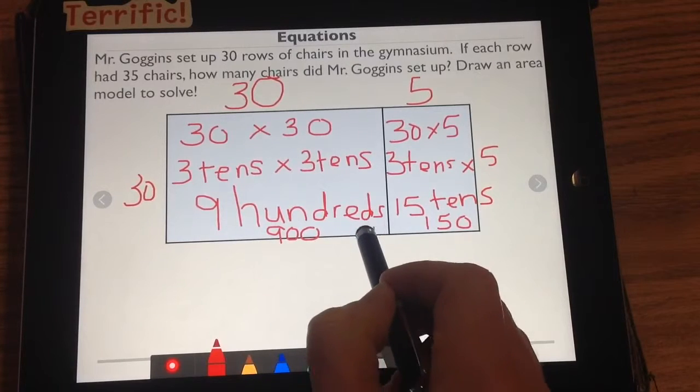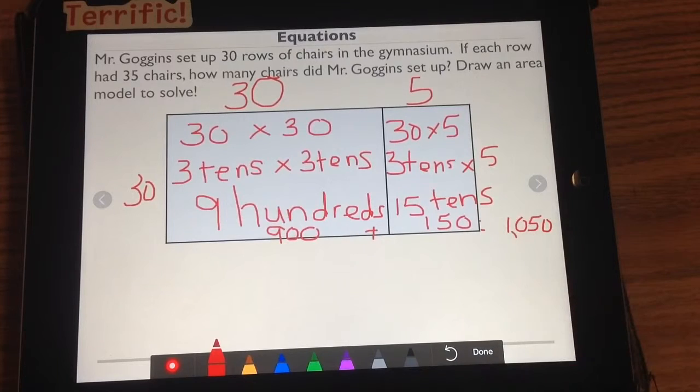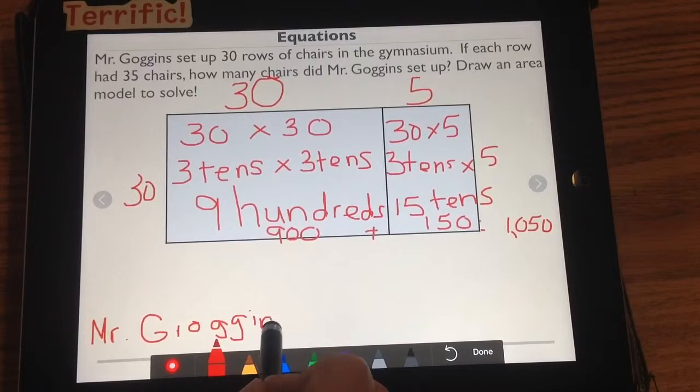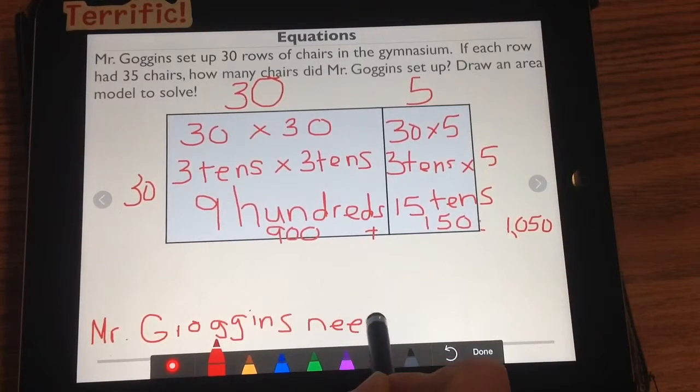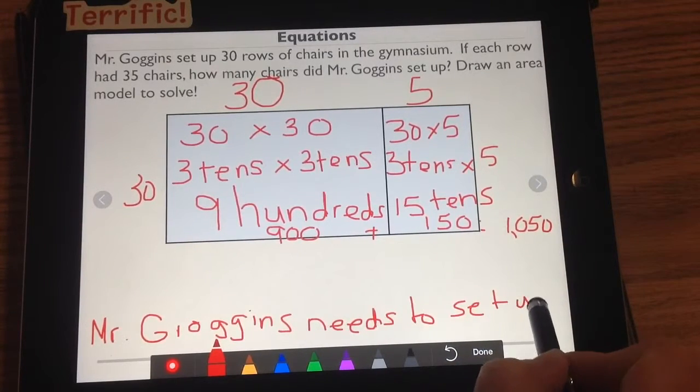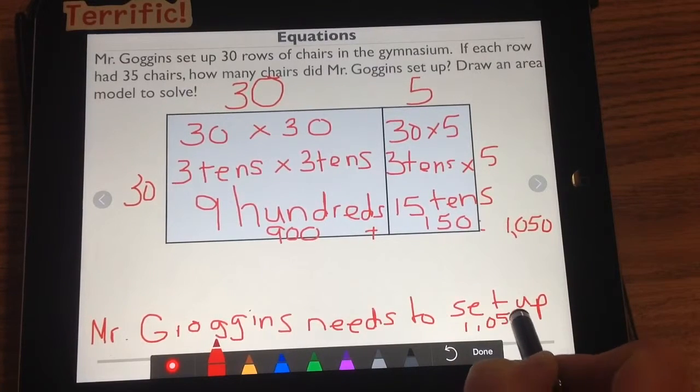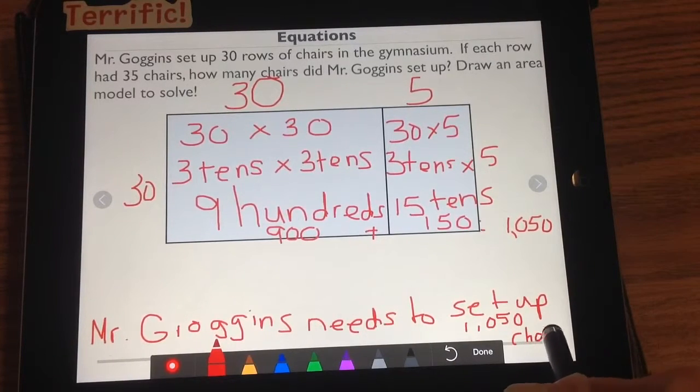If I add those two together, I get 1,050. And Michael right now is yelling at me because I did not write an answer statement. I'm sorry Michael. Mr. Groggins, you are totally right Michael. Mr. Groggins needs to set up 1,050 chairs. Poor Mr. Groggins.